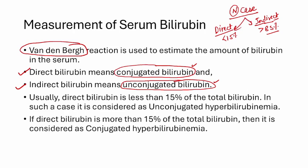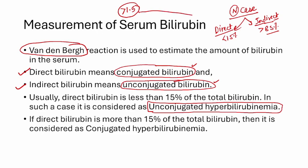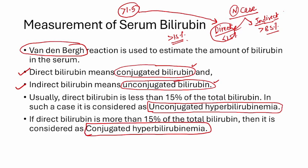If there is hyperbilirubinemia — meaning serum bilirubin is more than 1.5 milligrams per deciliter — and we see that direct bilirubin is more than 15 percent of total, then we call it conjugated hyperbilirubinemia. If direct bilirubin is less than 15 percent of total, it means unconjugated hyperbilirubinemia. So we only need to look at the direct bilirubin fraction to classify the type of hyperbilirubinemia.